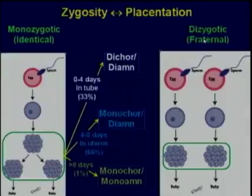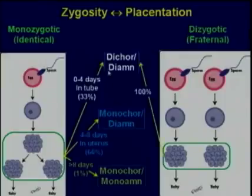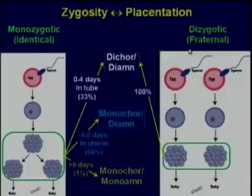What about fraternal or dizygotic twins? All of them split right from the get-go, like the zero-day splitters of identical twins. So they are 100% di-di — all fraternal twins are dichorionic-diamniotic.